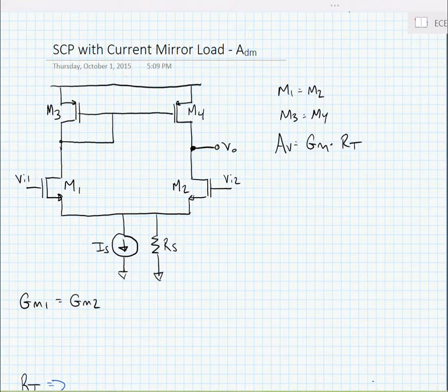Now here you can see that we've taken our source coupled pair consisting of M1 and M2, and we've used a PMOS current mirror consisting of M3 and M4 to act as an active load. The reason we're doing this is much the same reason that we looked at active loads for single-ended amplifiers before.